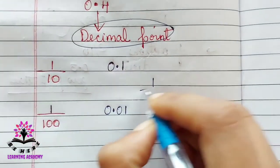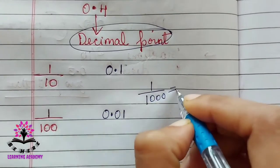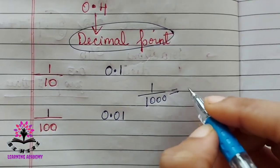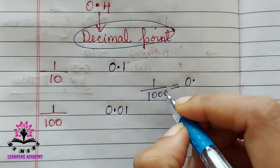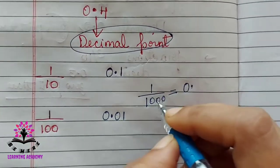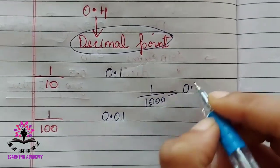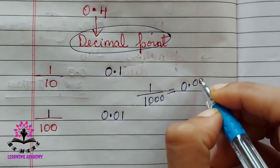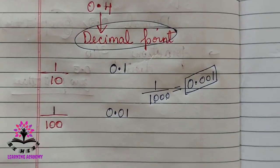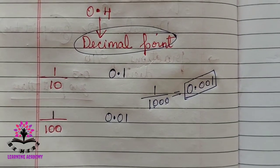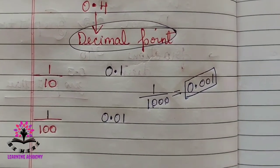Suppose if there is 1/1000, how will you write? There are two extra zeros after the decimal point, then one. So it is 0.001.